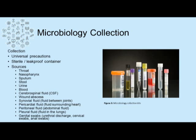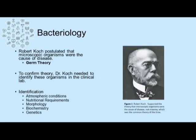Synovial fluid is the fluid between joints. Pericardial fluid is the fluid surrounding the heart. Peritoneal fluid is abdominal fluid. Pleural fluid is fluid in the lungs. And genital swabs can be collected from urethral discharge, cervical swabs, or anal swabs to check for the presence of sexually transmitted infections.